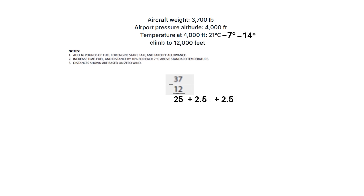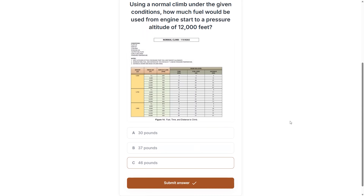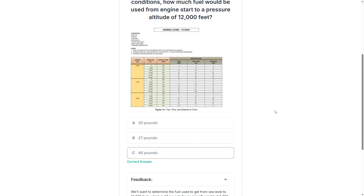10% of 25 is 2.5, so adding that twice gives us 30 pounds of fuel burn. Now we need to look at note 1, which says we add 16 pounds of fuel for engine start, taxi, and takeoff. We add 16 to our 30 to get a total fuel burn of 46 pounds, and we see that answer choice among the options.